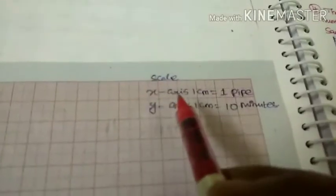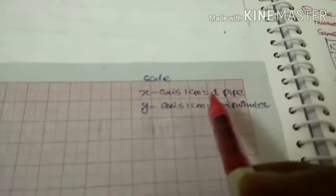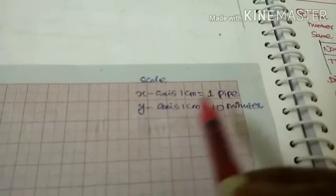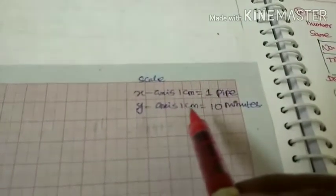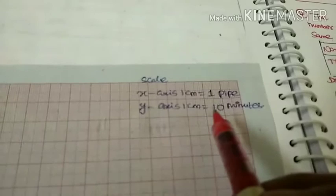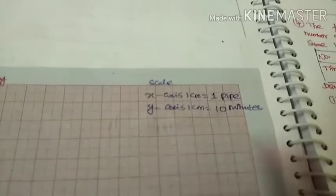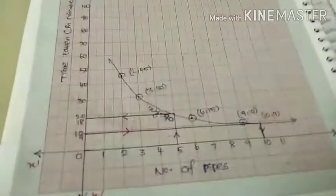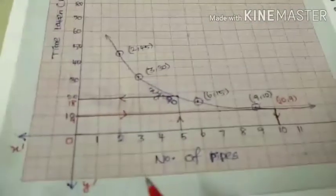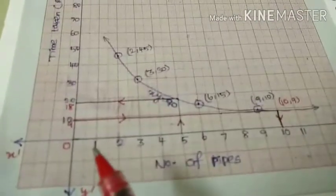For the graph scale: x-axis is 1 centimeter equal to 1 pipe. Y-axis is 1 centimeter equal to 10 minutes. The x-axis values start from 1.